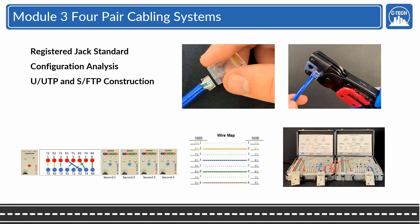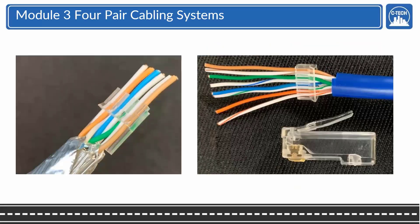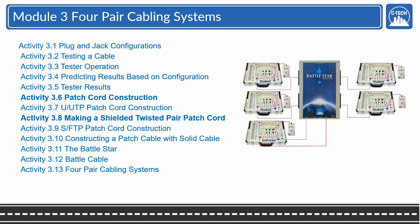Of course we're going to cover the registered jack standard. Configuration analysis - notice the new cable types U/UTP and S/FTP. Testing and verification. They're going to make their own cable supply, and then we have a lot of Battlestar and battle cable activities. Construction is the focus of this, and we're going to construct CAT 6A patch cords, both shielded and unshielded.